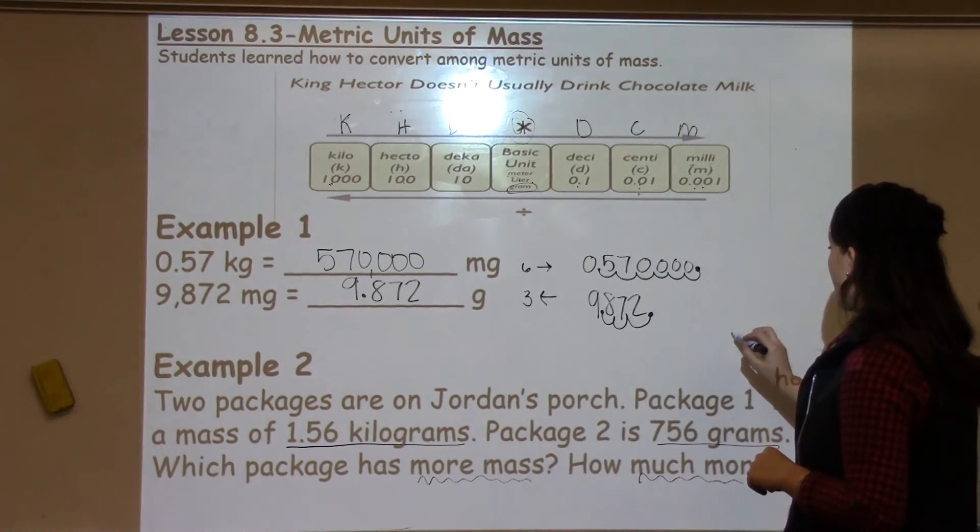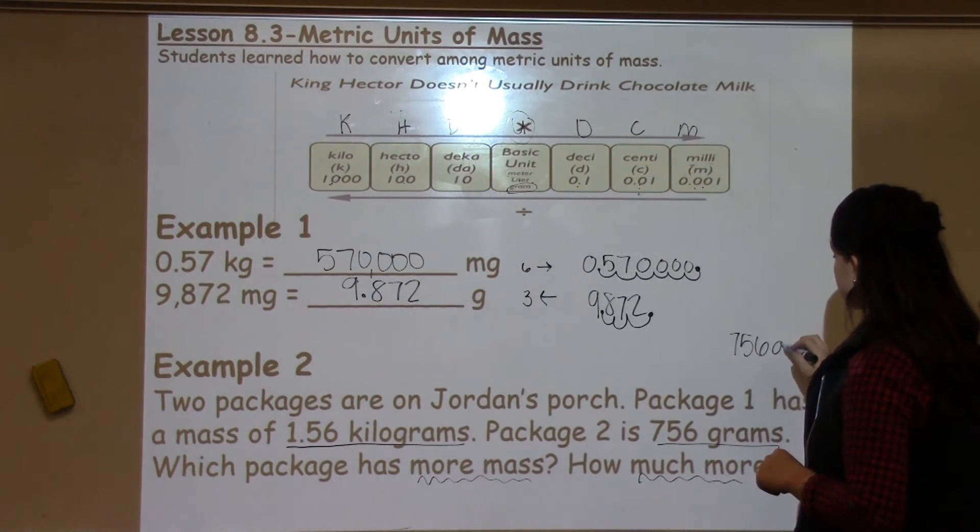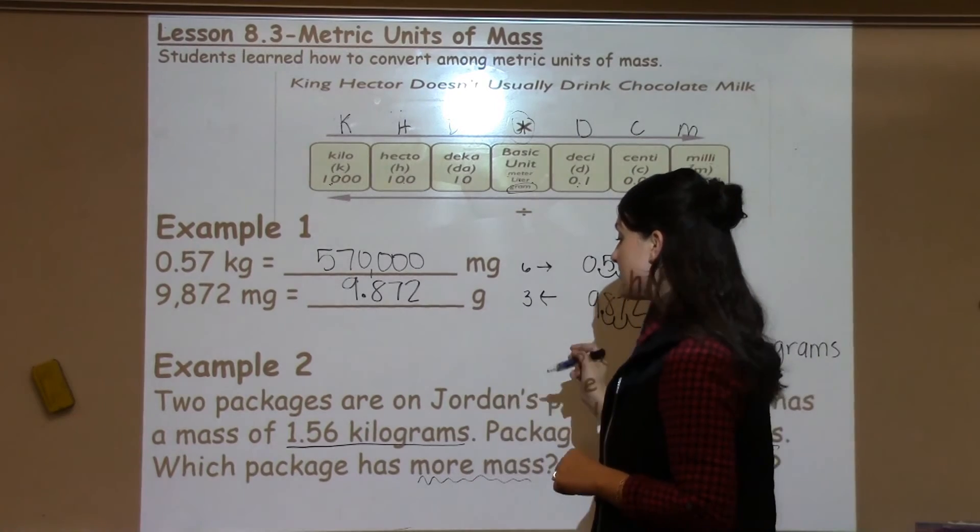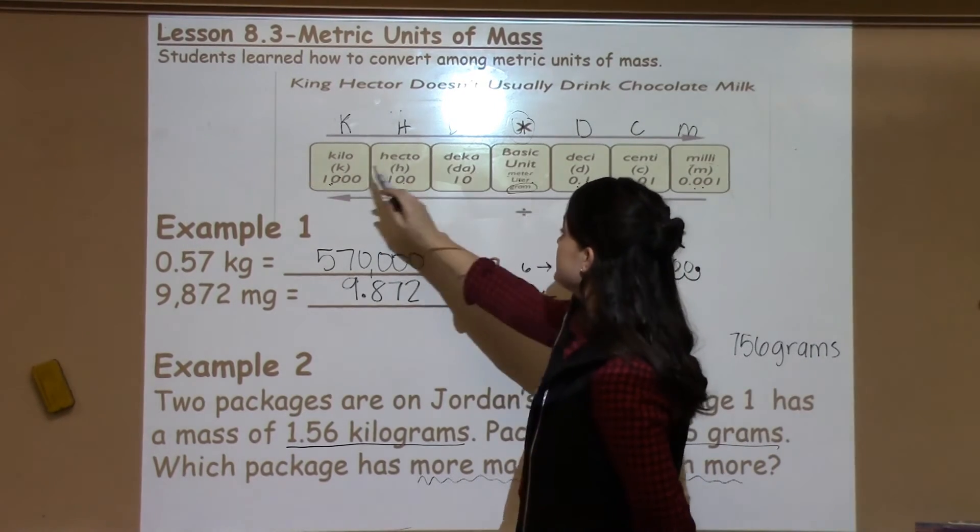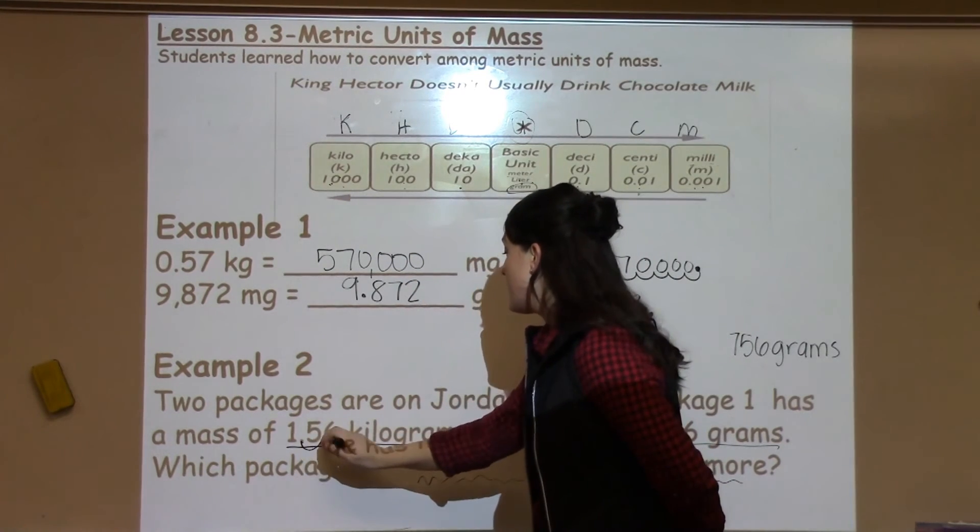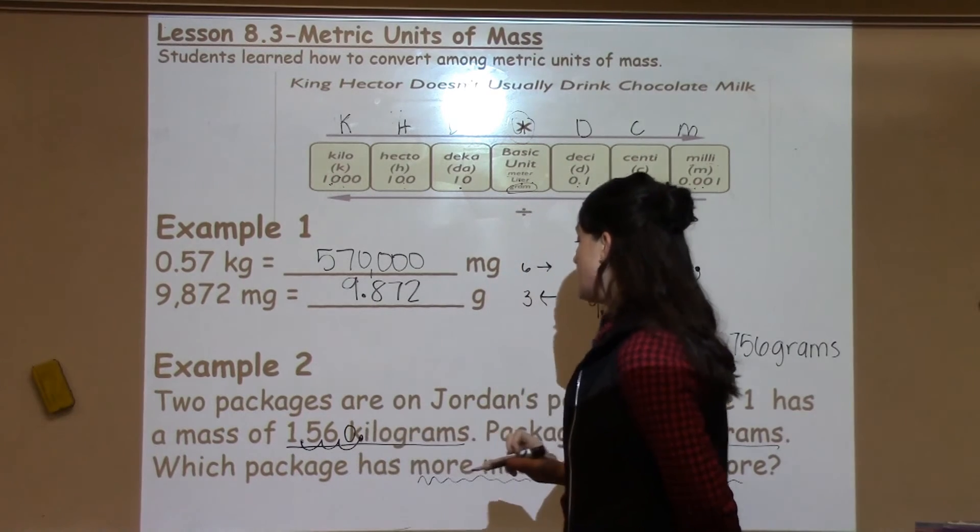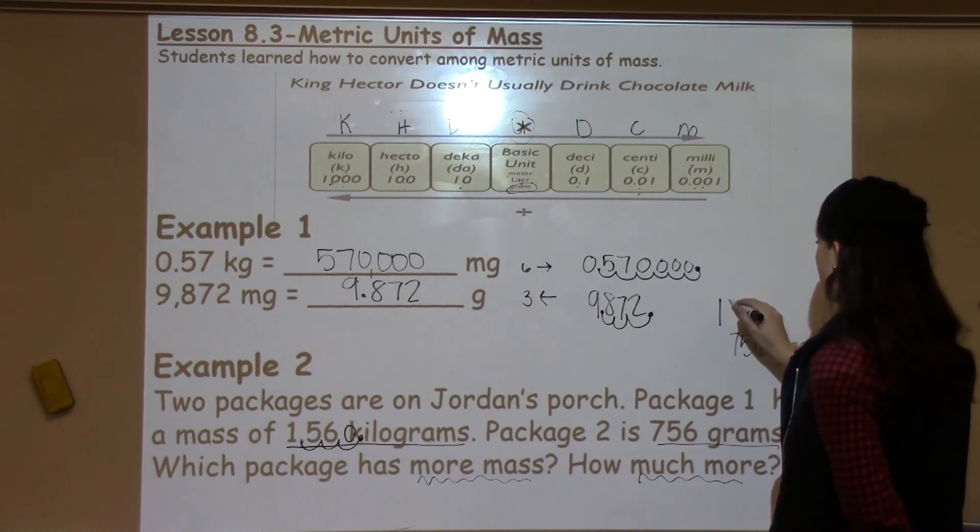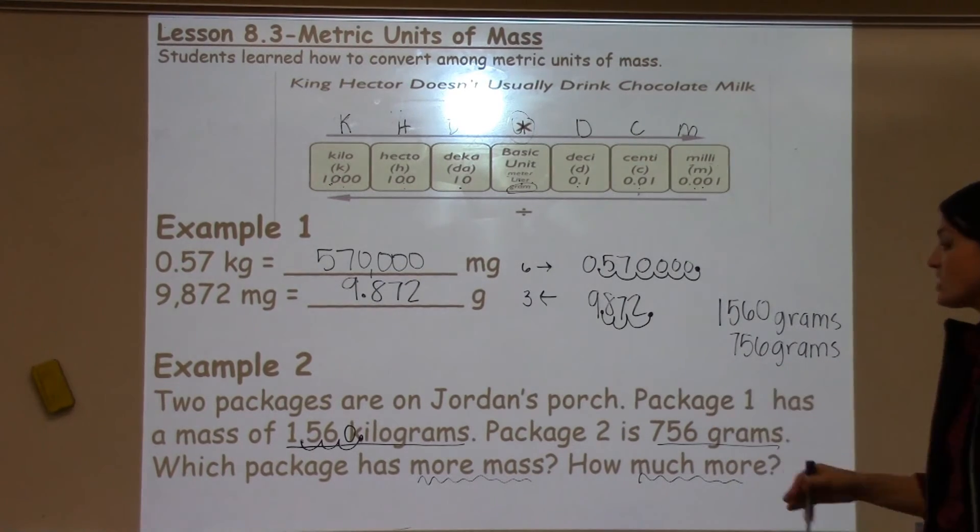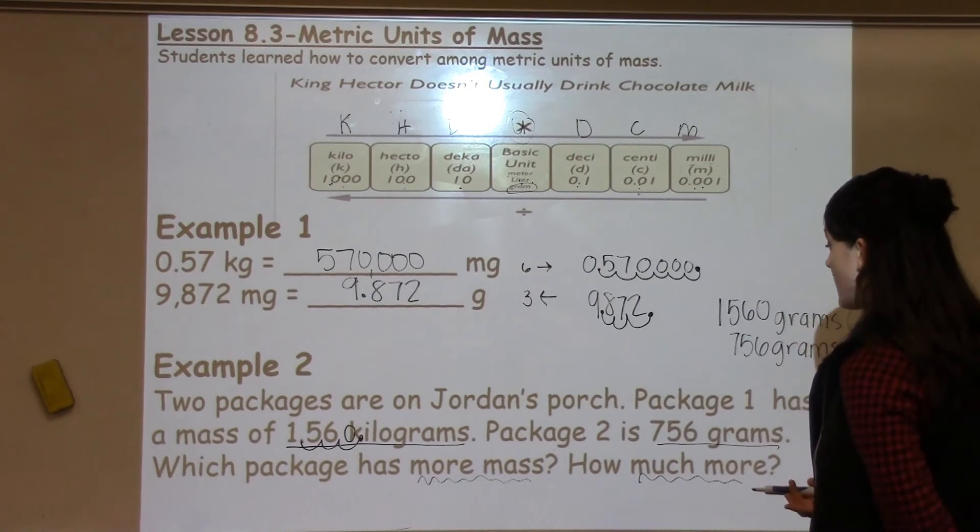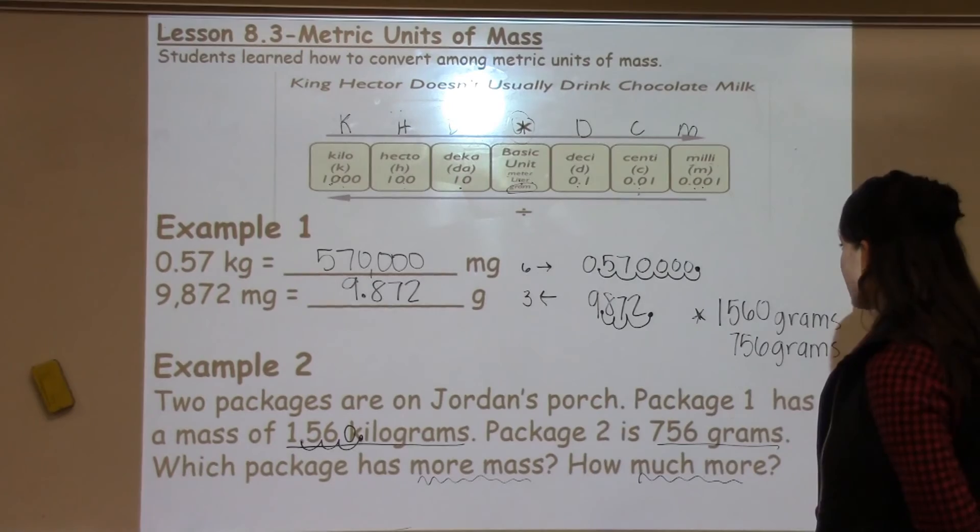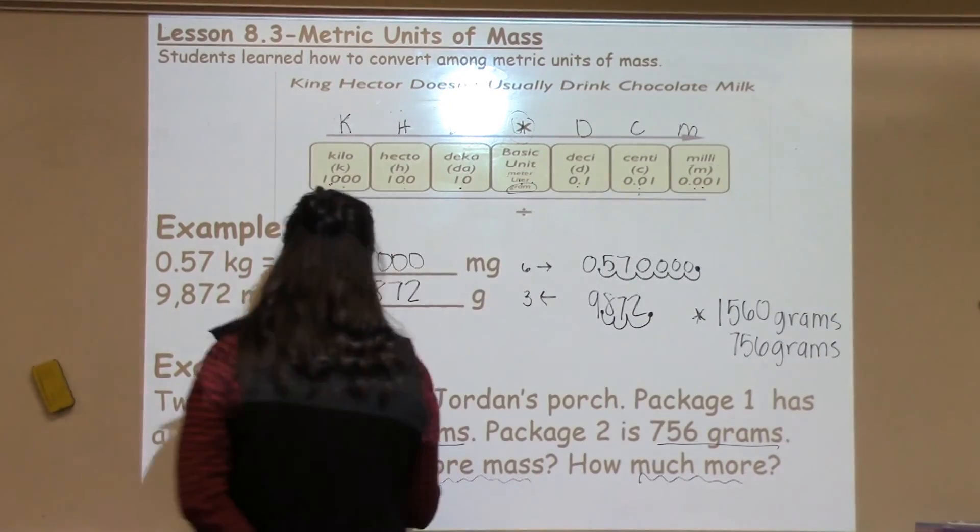I can choose to either make grams into kilograms or I can change kilograms into grams. The problem doesn't indicate which one I need to convert it to, so I can make that choice as long as I make both of the numbers the same unit. I'll be able to compare them appropriately. So I'm going to choose to go ahead and work with kilograms and change it to match grams. So I already have 756 grams, and now I need to work with 1.56 kilograms and move it three spots: one, two, three. So I'm going to move it one, two, three, add a zero. So I have 1,560 grams. Now that they're both in grams, it's really easy for me to see which one has more mass, which one is heavier. It would definitely be package one that's heavier, so I know I could answer this first part of the question.